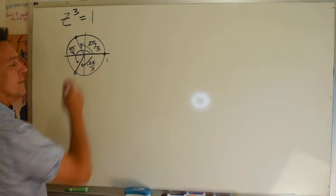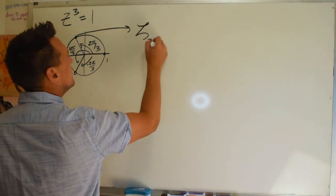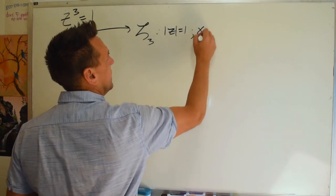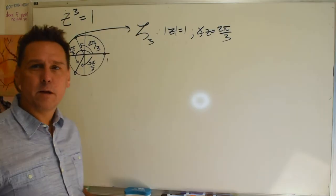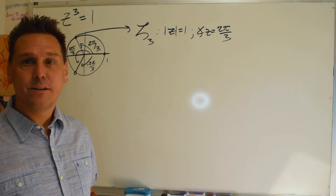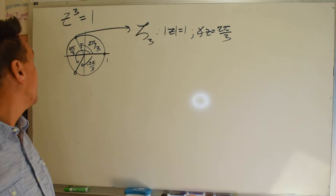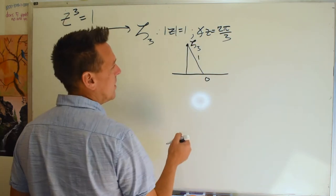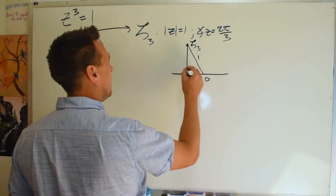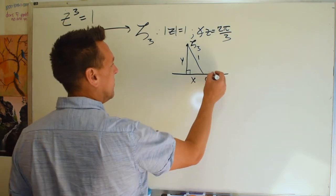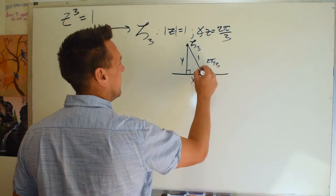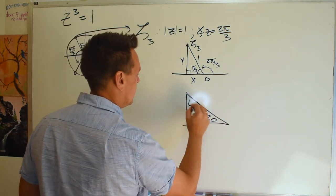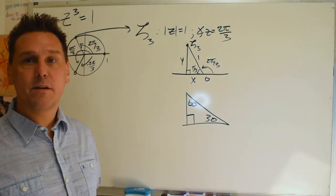This number is known as zeta three, and it has magnitude one and angle two pi over three. If you remember your unit circle from trig, you can actually figure out the horizontal and vertical components. Drawing the triangle from the origin to the point, the hypotenuse is one, there's a right angle, and if the full angle is two pi over three then the interior angle is pi over three — in other words, it's a 30-60-90 triangle. I'll leave figuring out those x and y components as an exercise.